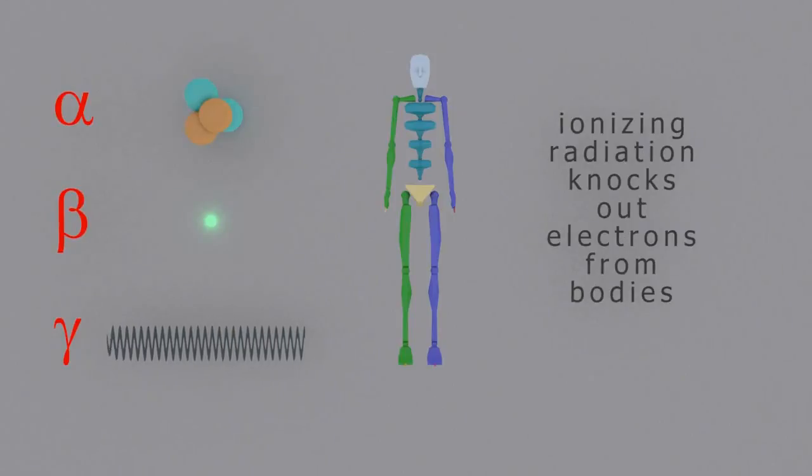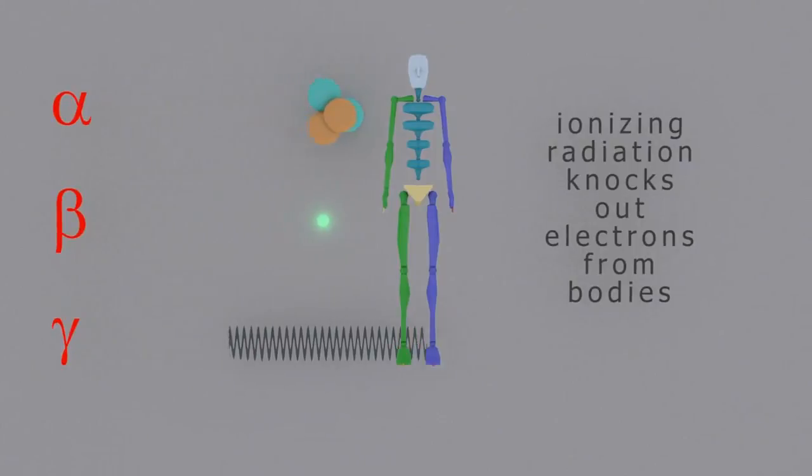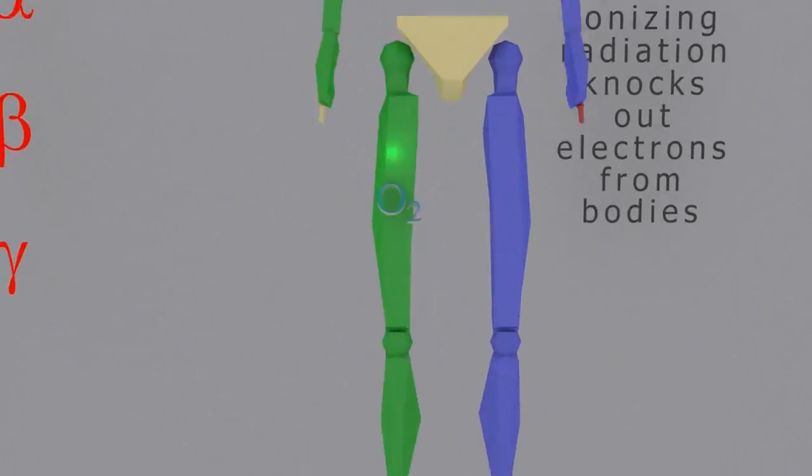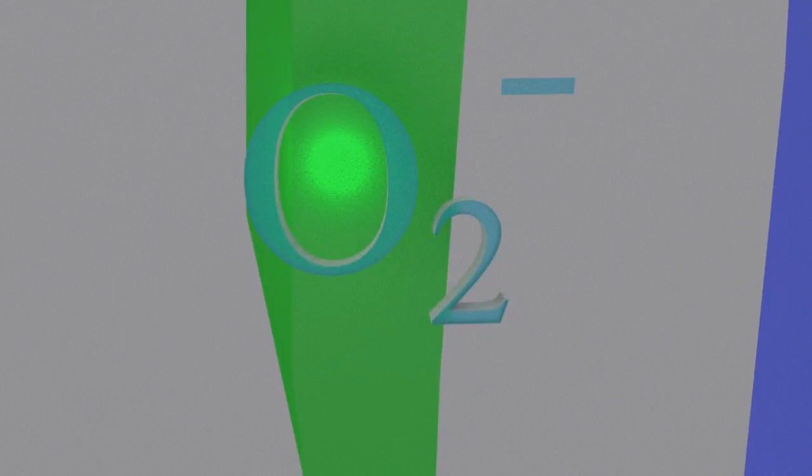When these hit the human body, they all have enough energy to ionize something in the human body—maybe it's water, maybe it's meat, maybe it's protein, maybe it's DNA. When the radiation has ionized something, an electron may be released. If that electron hits the O2 molecule, it becomes the O2 minus radical, the so-called superoxide radical.